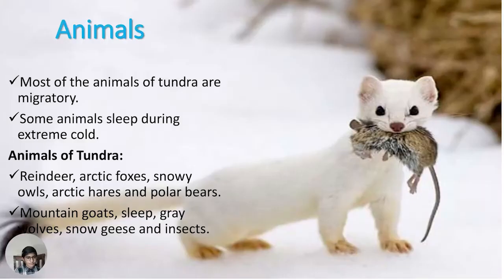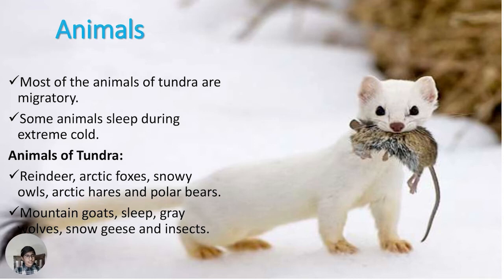Animals in tundra: Most animals that live in tundra are migratory, as the extreme cold makes it hard to survive year-round. Some animals sleep during extreme cold to survive. Animals of tundra include Arctic fox, snowy owl, Arctic hare, polar bears, mountain goats, gray wolves, snow geese, and insects.